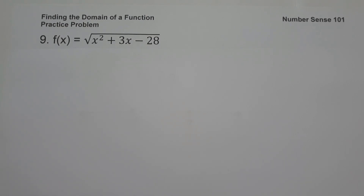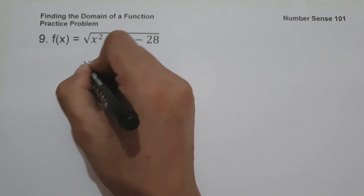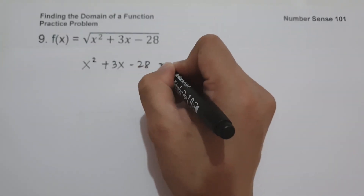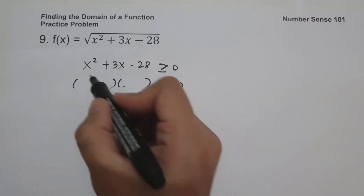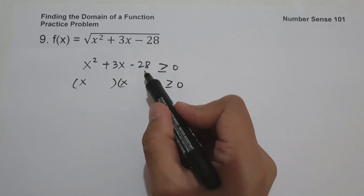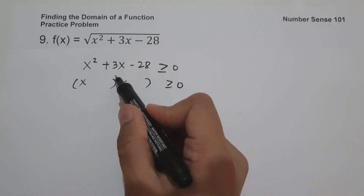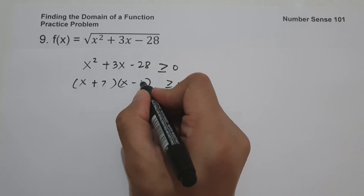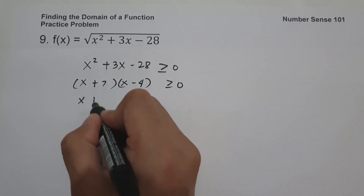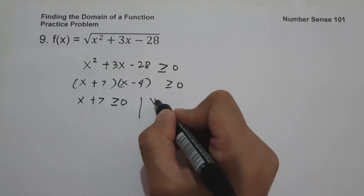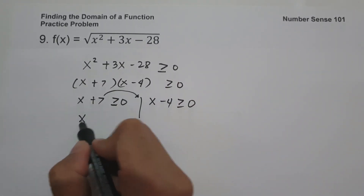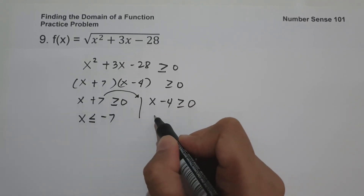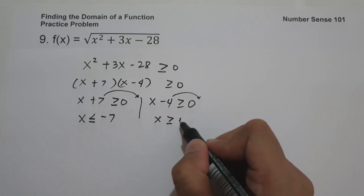On number nine, f of x is equal to the square root of x squared plus 3x minus 28. To find the domain, set x squared plus 3x minus 28 ≥ 0. Factoring: we need two numbers that multiply to negative 28 and add to positive 3, which are positive 7 and negative 4. So (x plus 7)(x minus 4) ≥ 0, giving x ≤ negative 7 or x ≥ positive 4.